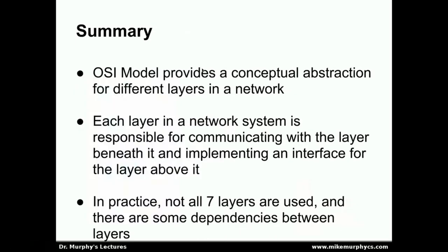In summary, the OSI model provides a conceptual abstraction for different layers in a network. This is a conceptual way we can use to discuss and design networking systems without becoming lost in the great amount of complexity required to make them work. Each layer is responsible for communicating with the layer beneath it and implementing an interface for the layer above it. In practice we don't use all seven layers and there are sometimes some dependencies between layers, but this is still a good conceptual model for understanding the pieces at a high level that make up a network system.